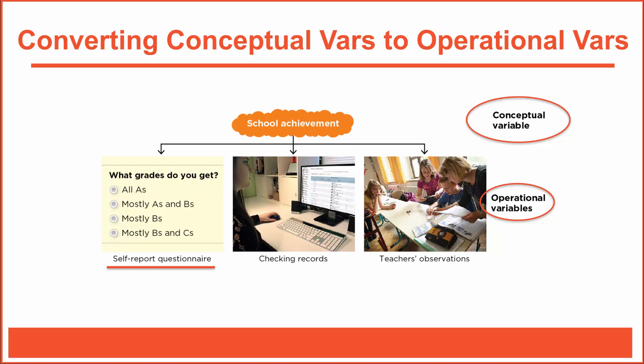That could suit our purposes, but it's not the only way to operationally define student achievement. To get more precise, accurate data, we might operationally define it based on a student's official school records—their academic transcripts. Or, if we're interested in more nuanced information, we might ask teachers to share their observations and opinions of each student's performance in class. These are all valid ways to operationally define, or operationalize, student achievement. Operational definitions help us define the specific research operations we need to follow to collect our data.